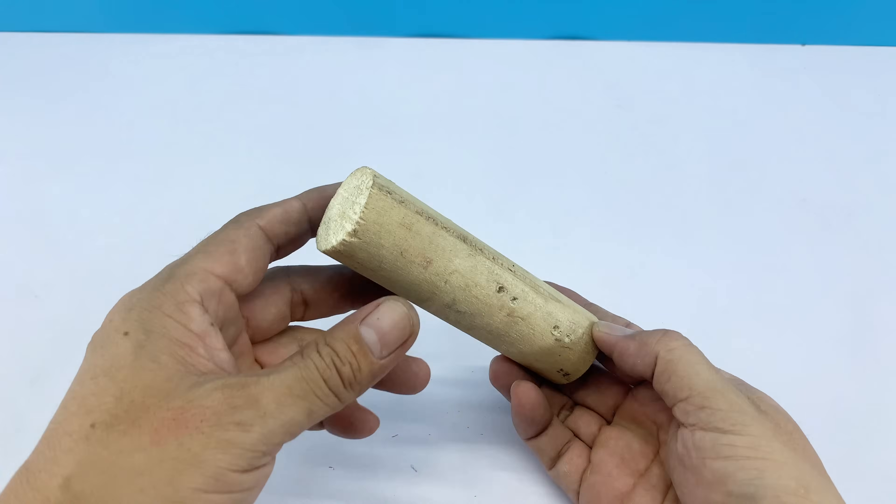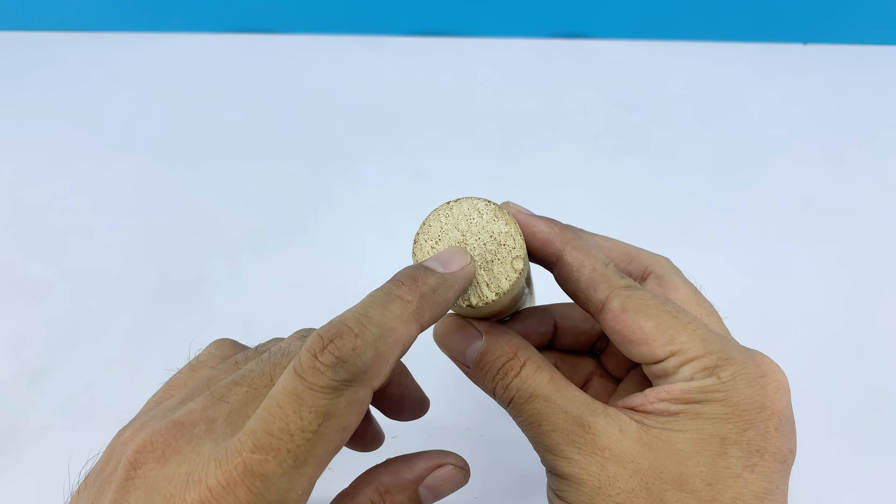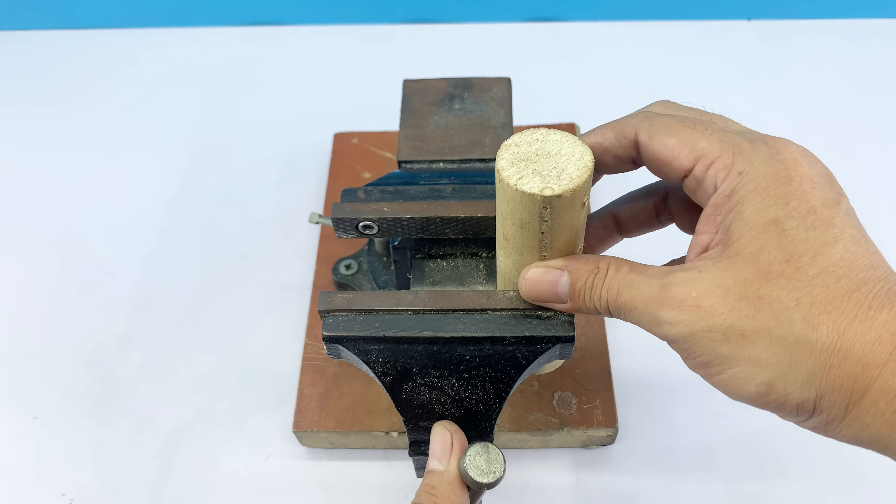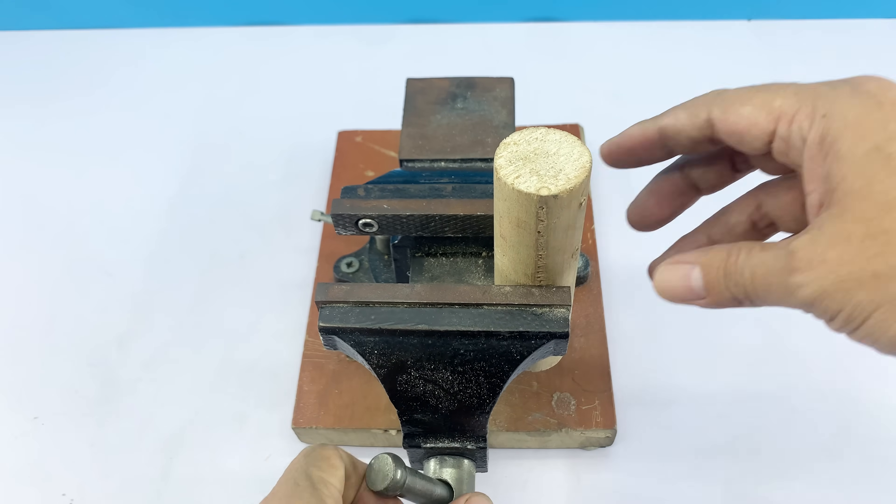I've also got a wooden handle about the length of my hand. We'll turn it into the welding device's grip for safety. When drilling a small hole through the wooden handle, I secure it firmly in a vise, preventing slipping or misalignment.